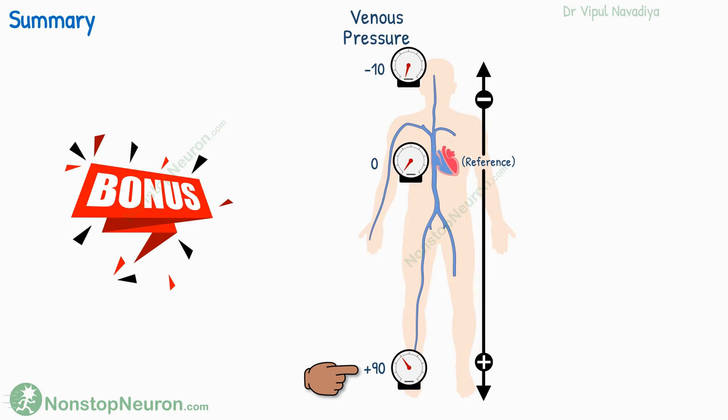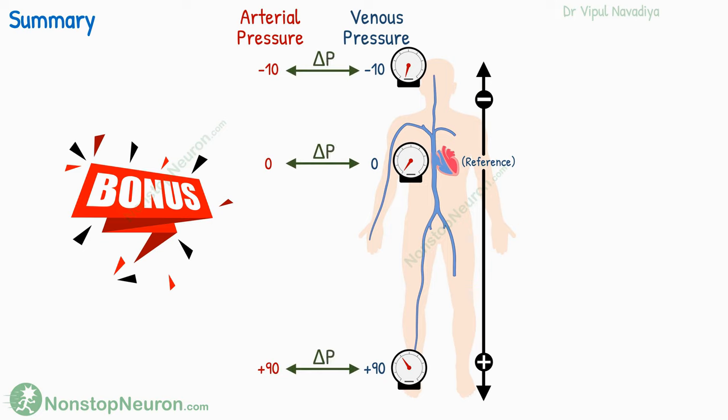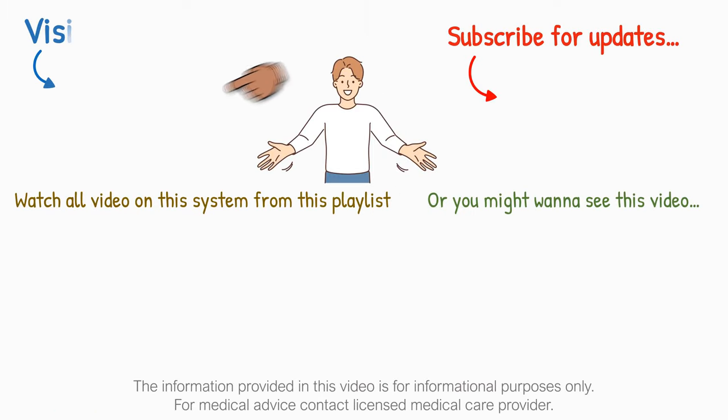And for sticking with me until the end, I have a bonus point for you. With gravity, there is a parallel increase in arterial pressure too. So the difference in pressure between the two, which basically drives the flow of blood, is maintained constant. So don't worry when you stand up next time — blood will keep flowing through your leg veins despite this pressure rise. So stand up and go tell your friends that if they are not learning cardiovascular physiology through NonstopNeuron videos, they are learning it the wrong way. See you in the next video.